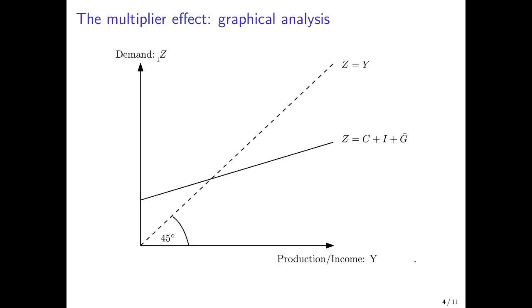In the graphical depiction of the multiplier effect, we start with the goods market where equilibrium is along the 45-degree line, where demand equals supply, which equals production or income. The aggregate demand curve starts at a positive intercept but has a slope lower than 1, so it will definitely intersect the 45-degree line somewhere in the graph — in our case at this point, which is the equilibrium of the goods market with the associated equilibrium production.